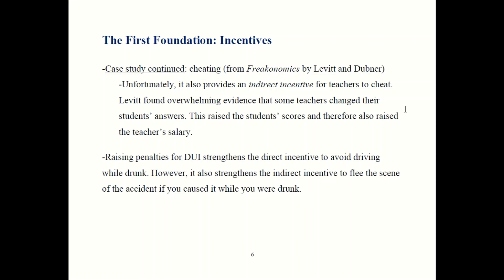Levitt thought about this carefully and found creative tools to look for evidence of cheating — and he found a lot. Teachers were usually not brazen enough to give everyone 100%, which would be suspicious. Usually he found they cheated in more modest ways that still had significant impact. For example, they might change a block of five to ten answers on the exam — enough to raise overall scores significantly and get a pay raise, without being dramatic enough to draw suspicion.